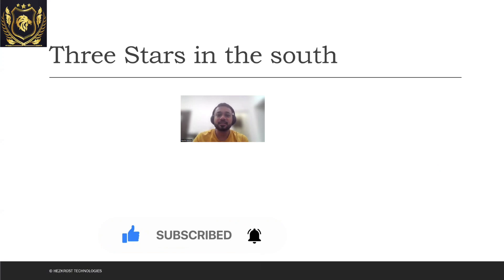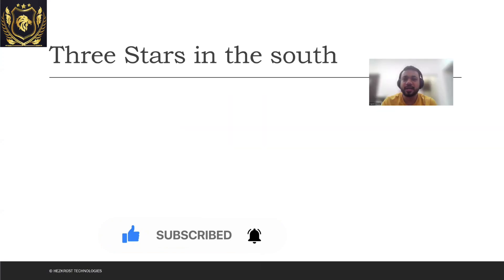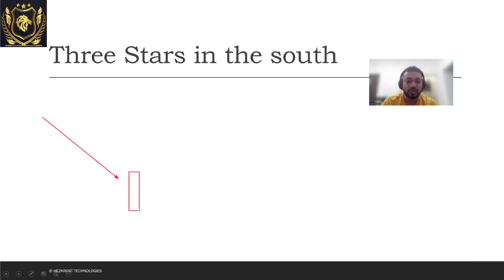So what exactly is Three Stars in the South? Suppose there is a downtrend which is currently going on, and what you see in this downtrend is a long candlestick being formed. The next day, this candlestick is actually smaller than your previous candlestick. And the third day, the candle is even smaller than the consecutive previous candles that were formed.